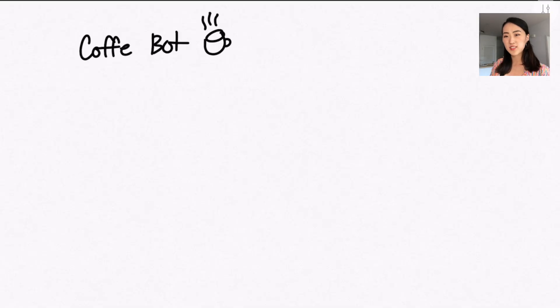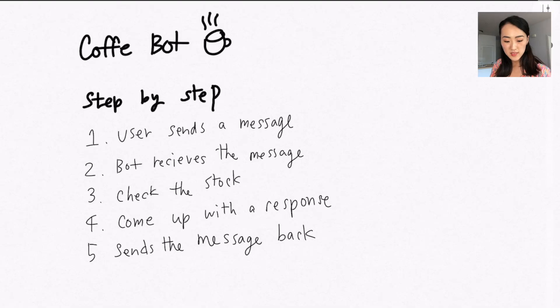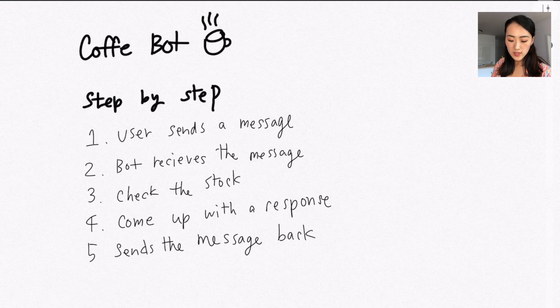Step two: break it down. Micro-interaction is all about giving feedback to the user about what is going on in the computer's head. It's really important to figure out the steps that the computer goes through so that we know exactly what screens we need to design. This is where I bring in Sketchbook to jot down notes. The user sends a message, the bot receives it and then checks the stock, and then they come up with a response and send the message back.